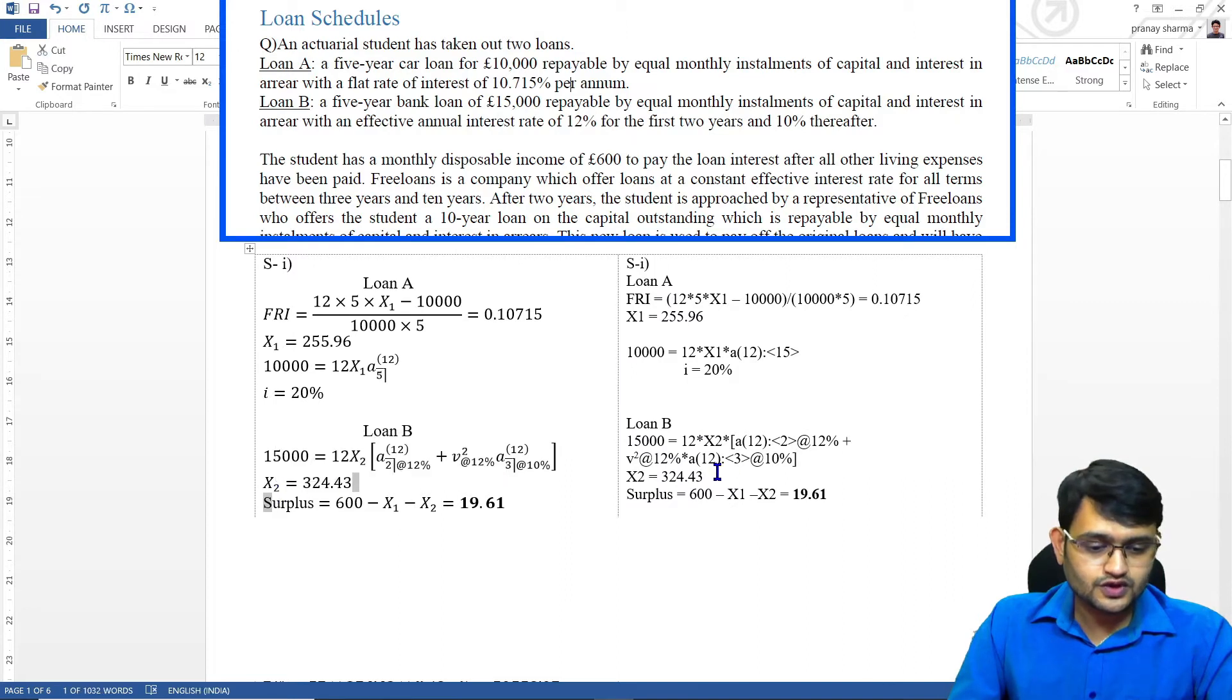So we get our x2. You see I have not written what our a2 payable 12 value is or a3 payable 12 value is. You do not have to write any intermediate calculation, just write your equation and your final answer. Similarly our surplus is equals to 19.61.